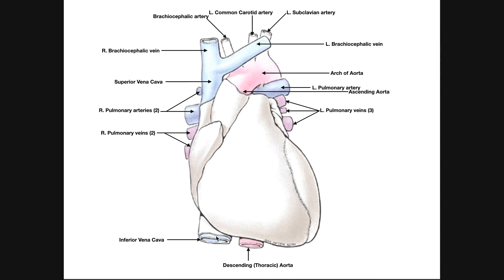There's one other vein we can't see here that brings blood back to the right atrium: the coronary sinus. The coronary arteries bring blood to the heart tissue, but the tissue also needs to be drained. Veins in the heart drain into the coronary sinus, which then brings blood back to the right atrium. So deoxygenated blood is brought back to the right atrium through three major vessels: the superior vena cava, the inferior vena cava, and the coronary sinus.